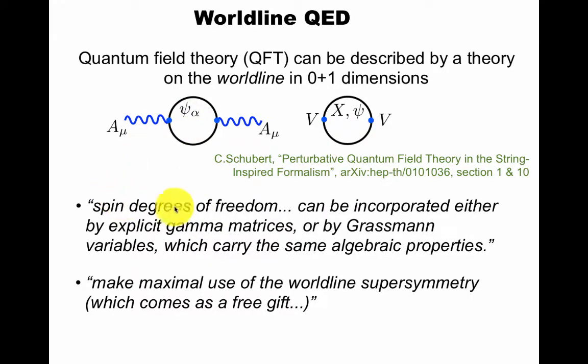As Schubert emphasizes, the spin degrees of freedom here could be incorporated either by explicit gamma matrices, as we're used to here, or by Grassmann variables on the worldline, which carry the same algebraic properties. So we did not put a spinor index on this psi. There is one here, but we get the same result. The worldline supersymmetry, I haven't really explained what it is yet, comes as a free gift. All we did was put free bosons and fermions on the worldline, and worldline supersymmetry in regular QED without spacetime supersymmetry comes as a free gift. So let's try to understand that.